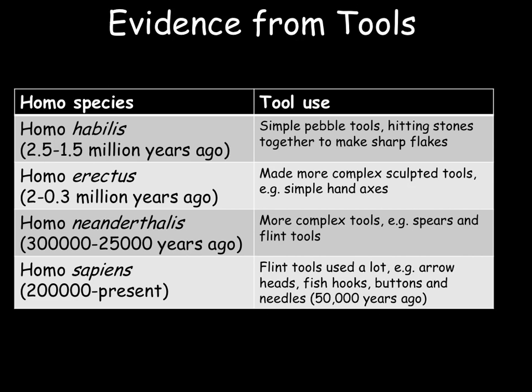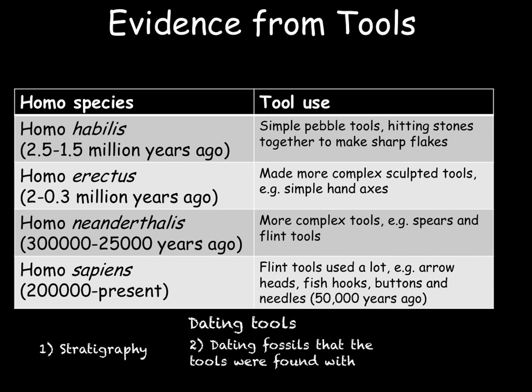Whenever we find a tool from a prehistoric age we need to be able to date it to find out how old it is. We can do this in three ways. The first is stratigraphy, where we study the rock layer that the tool was found in — older rock layers are normally found below younger layers, so tools in deeper layers are older, though rock layers are able to move so this isn't always completely accurate. We can also date any fossils found in the same rock using carbon dating, or carbon date any material found with the tool that is made from carbon, for example a wooden handle.